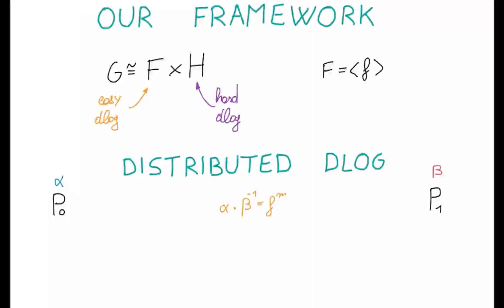Basically, we have two parties that hold two values, alpha and beta, whose quotient is a power of F, F to the M. And the goal is to convert these inputs into an additive secret sharing of M without any interaction.